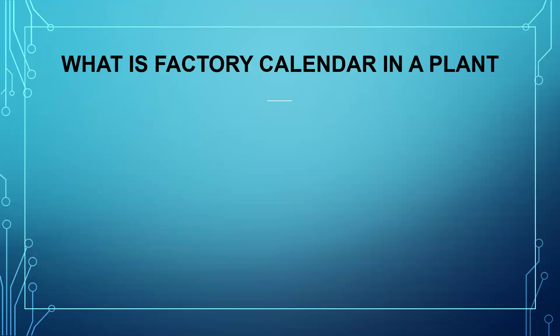Next question: what is the factory calendar in a plant? The expected answer is: in the plant we select a factory calendar based on the region. For example, if the factory is in Chennai and another factory is in Mumbai, a separate factory calendar will be created for each — because for Chennai, Pongal will be a holiday, but in Mumbai, Holi will be a holiday. In order to differentiate these two dates, they create factory calendars. It will be created by a human resource consultant, HR or HCM consultant. That is what a factory calendar is.